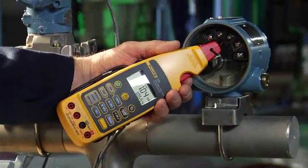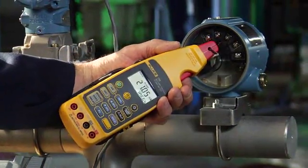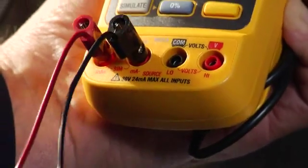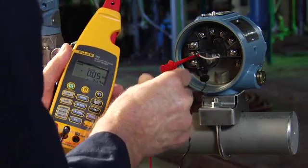Next, substitute test the transmitter with the Fluke 773. Remove the signal wires from the transmitter and break the loop. Connect the test leads from the Fluke 773 to the transmitter wires to use the milliamp simulate function.